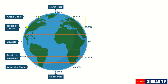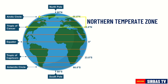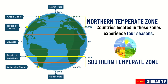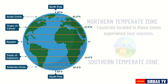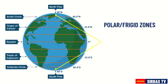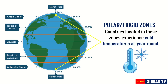Between the Tropic of Cancer and the Arctic Circle is the Northern Temperate Zone. And between the Tropic of Capricorn and the Antarctic Circle is the Southern Temperate Zone. Countries located in this zone experience four seasons: Winter, Spring, Summer, and Autumn. Areas within the Arctic Circle and the Antarctic Circle are called Polar or Frigid Zones. Countries located in this zone experience cold temperature all year round.